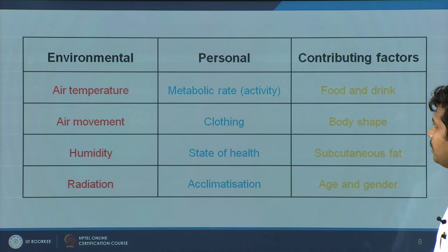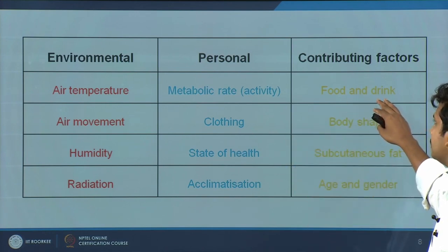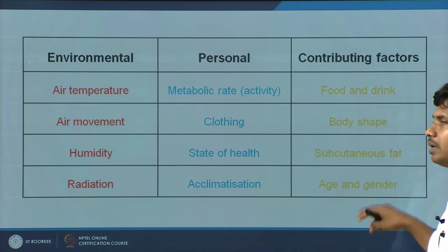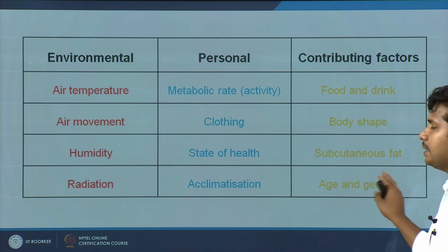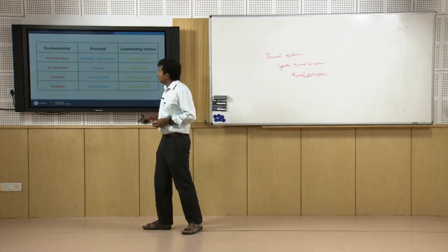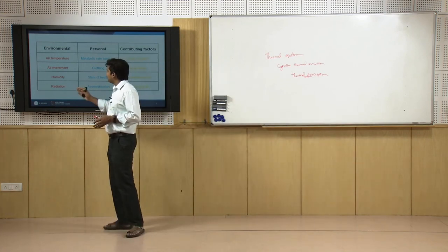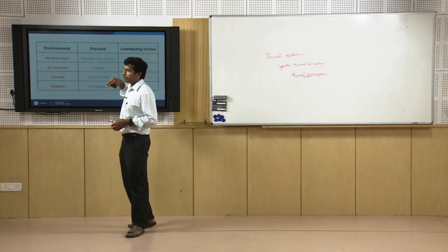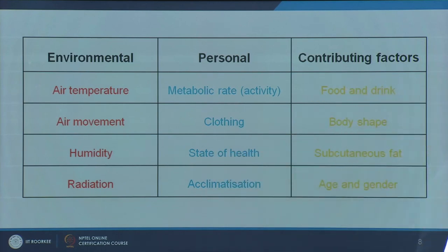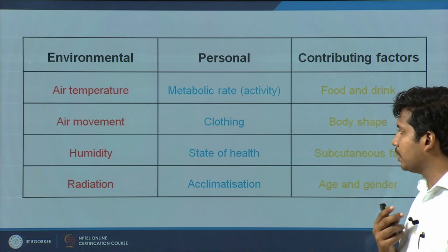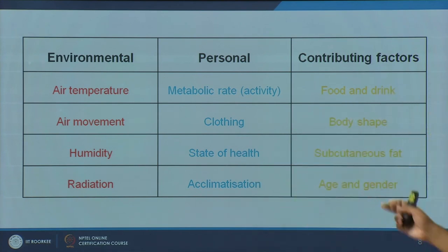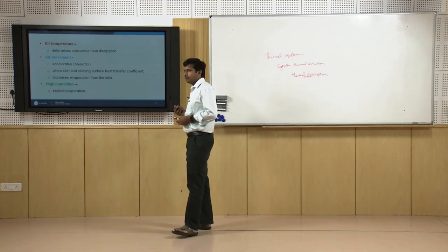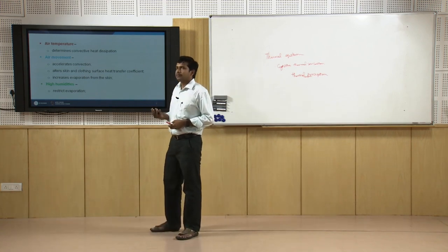Other contributing factors include food habits, drink, body shape, fat content (BMI), height, weight, age, and gender — all of which have a great contribution. As part of this module and the next, we will primarily look at environmental variables and two personal variables. In a later module where we talk about adaptive thermal comfort, we will discuss acclimatization, age, and gender.